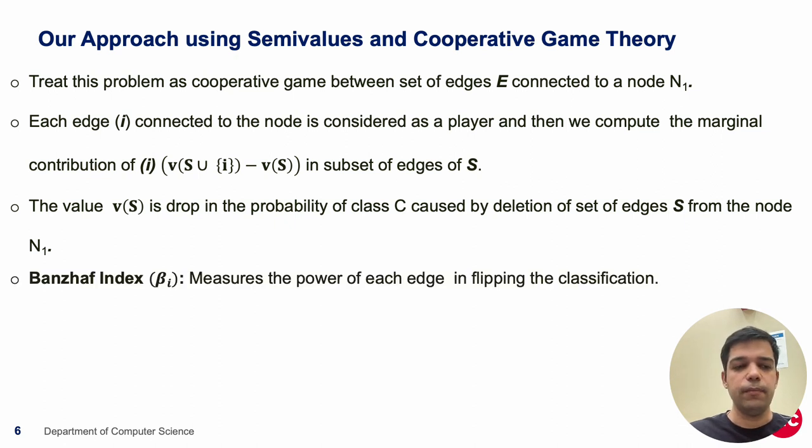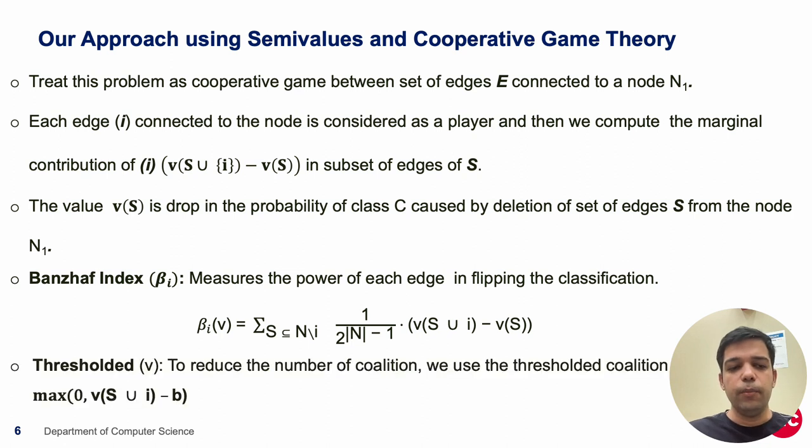Then we use the Banzhaf index which is a popular concept from cooperative game theory to calculate the contribution of each edge in flipping the classification. To improve Banzhaf index we introduce thresholding where we discard some of the coalitions which don't contribute much to the probability drop of the current class C.